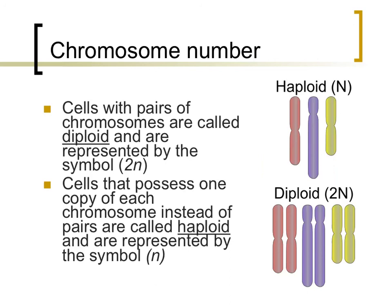When two gametes combine during sexual reproduction, you end up returning to the typical, or diploid, number of chromosomes. That is the end of this video introducing cellular reproduction DNA vocabulary terms. If you are interested in learning about any other topics relating to cellular reproduction or any other themes of biology, please subscribe to my channel. Thank you.